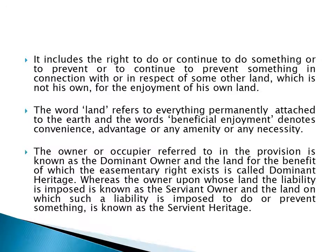It includes the right to do or continue to do something, or to prevent or continue to prevent something in connection with or in respect to that other land for which the easementary right exists — land that is not his own but is given for the enjoyment of his own land. For example, the right of way. The word 'land' here refers to everything permanently attached to the earth, and 'beneficial enjoyment' means convenience, advantage, amenity, or any necessity.